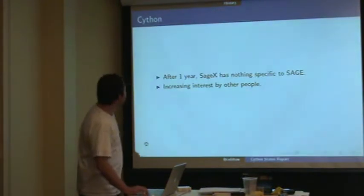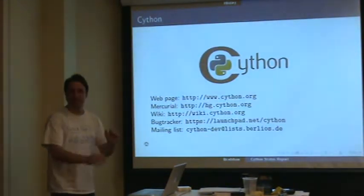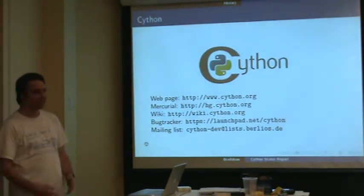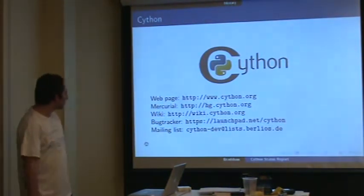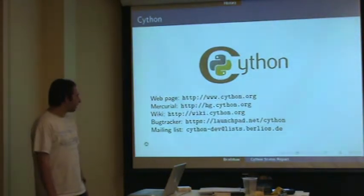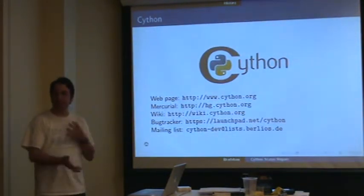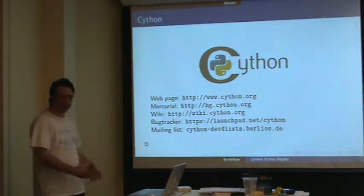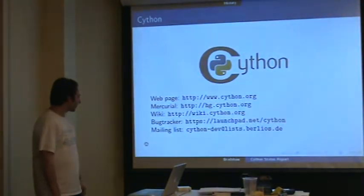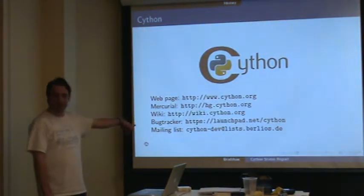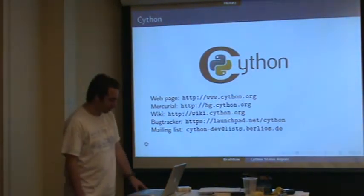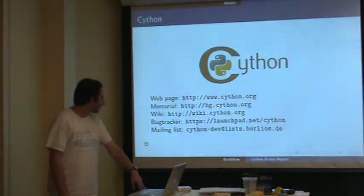We realized there was time to do another fork — so here it is, Cython. We've got a web page, domain, Mercurial repository, wiki, bug tracker that actually has a fair amount of bugs being tracked and fixed by people, and a mailing list. Stefan was the guy who set this up — he doesn't like Google Groups, so he set up this list. It works okay, though the archives aren't instant.